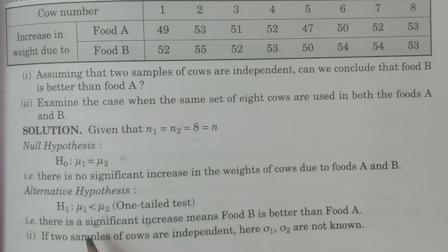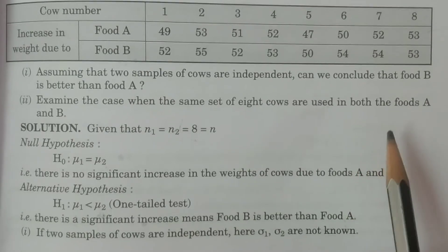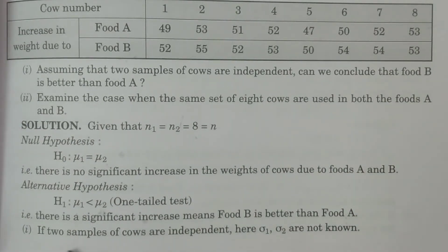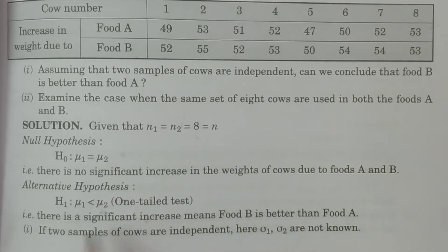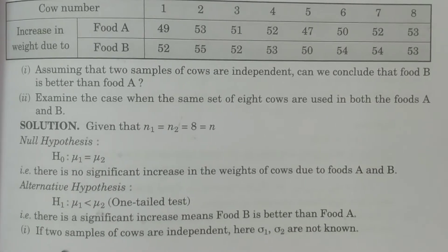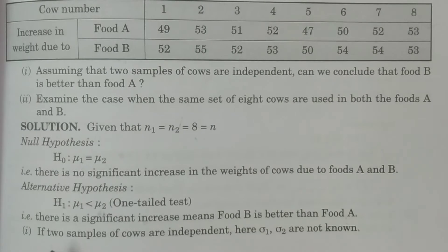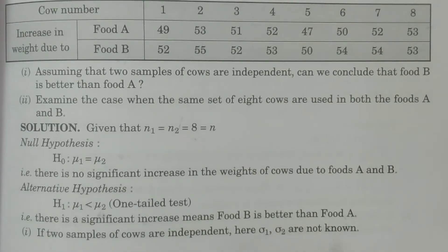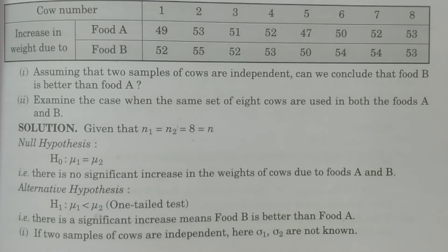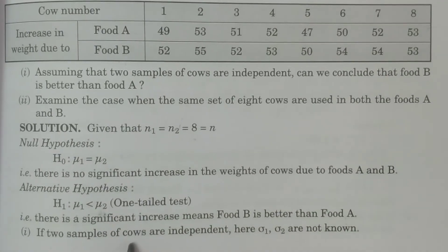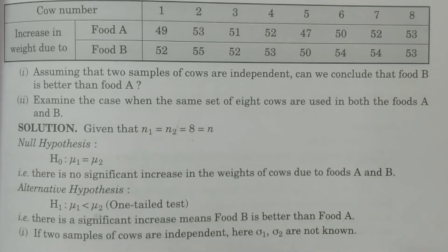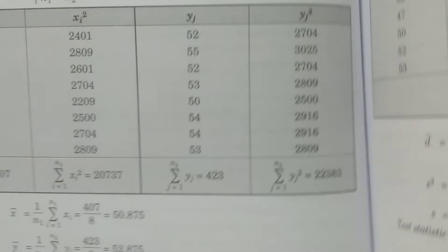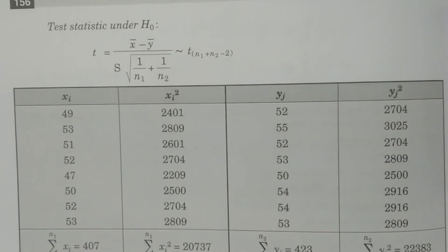Since μ1 < μ2, this is a one-tailed test. Now consider Case 1, Problem 1: if the two samples of cows are independent, σ1 and σ2 are not known in both cases. The null and alternative hypotheses have been written. Now for Case 1, since they are independent and σ is not known, we proceed with the test statistic.